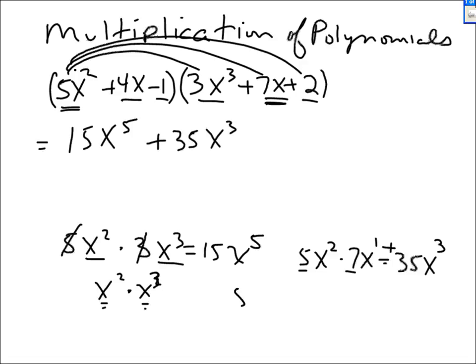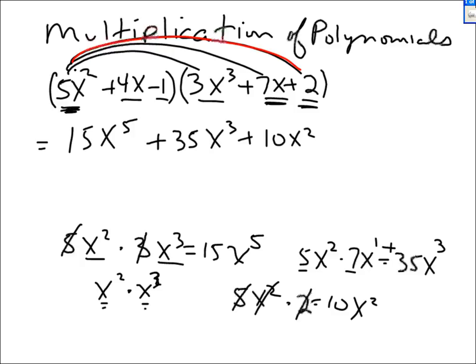Now I take the first term and multiply it by the third term. I'm multiplying 5x squared by 2. 5 times 2 is 10, so I get 10x squared. I've now multiplied the first term in the first bracket by every term in the second — the first term is done.